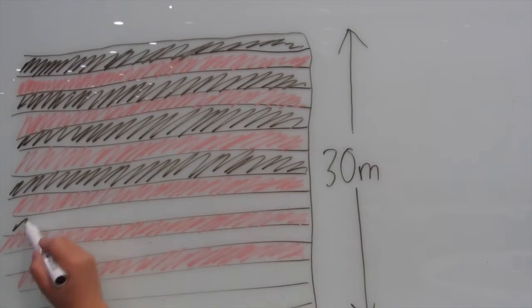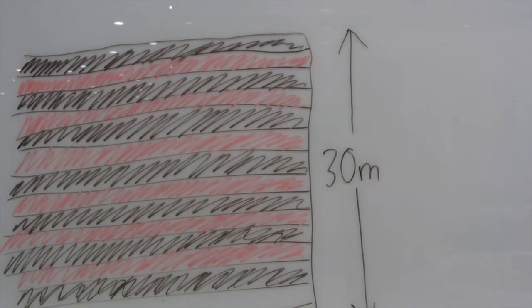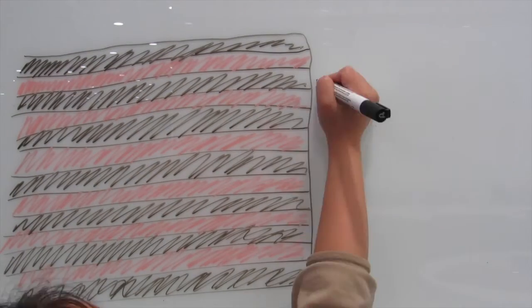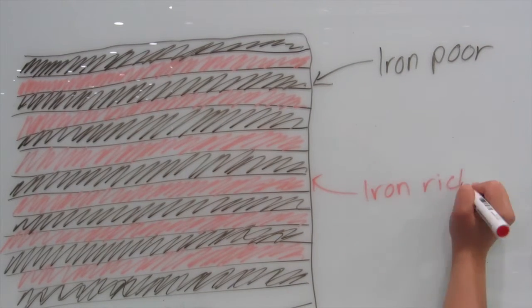The black layers are iron-poor and contain mainly silica, and the red layers are iron-rich, which consist mainly of hematite and magnetite.